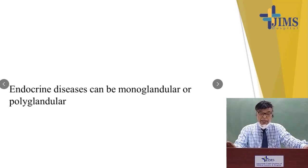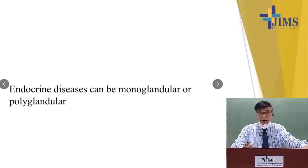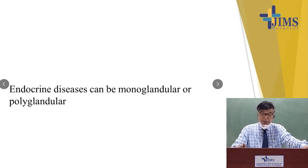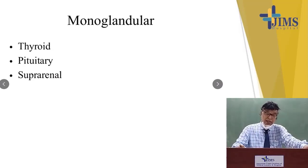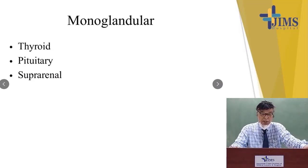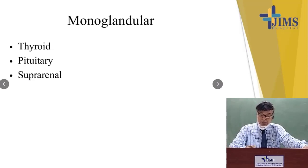Endocrine disease can be monoglandular or polyglandular. It can occur simultaneously or one after another; more glands may be affected, or lifelong only a single gland may be affected. Thyroid, pituitary, and suprarenal are the three glands most commonly affected by monoglandular endocrine disease.